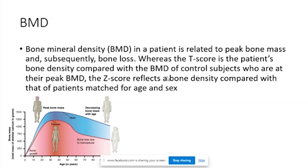The T-score compares the patient's bone density to control subjects at their peak BMD, which occurs around ages 20 to 30. Before 20, BMD is usually lesser; after 30, there is a gradual reduction. The Z-score compares density with patients matched for age and sex. So T relates to peak possible BMD, and Z relates to the general population of that particular age and sex.